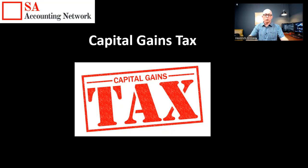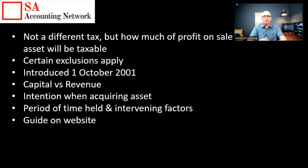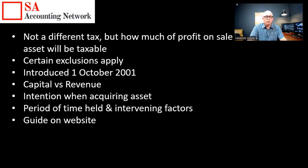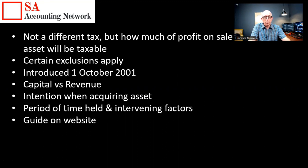Today's talk is about capital gains tax. A lot of people get confused — they think capital gains tax is a separate tax, but that's incorrect. Capital gains tax only determines how much of the profit you made on the sale of an asset is going to be included in your normal taxable income. It's not a different type of tax; it's just how much of the profit from the sale of an asset will become taxable. There are certain exclusions which we'll talk about later.